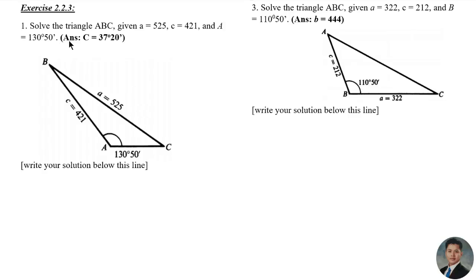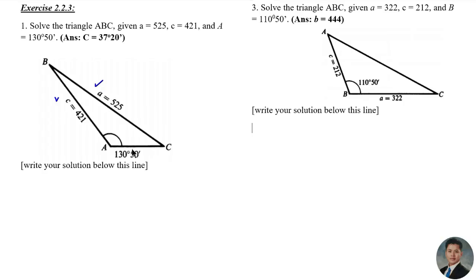Let us solve some exercises. Number one: solve the triangle ABC given side a = 525, side c = 421, and angle A = 130 degrees 51 minutes. There is a given figure with an obtuse angle A. We have two sides and an angle opposite one of them, so therefore this is Case 3.